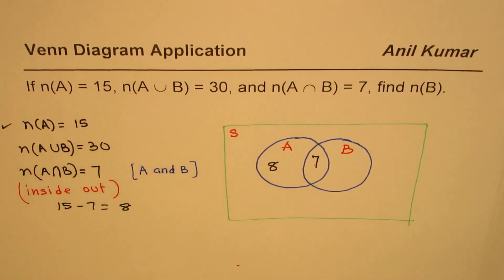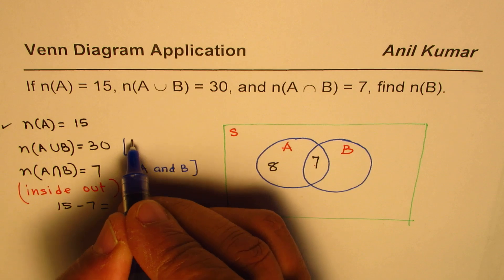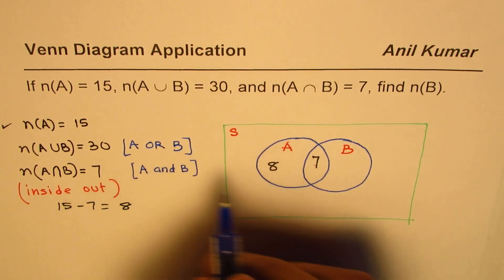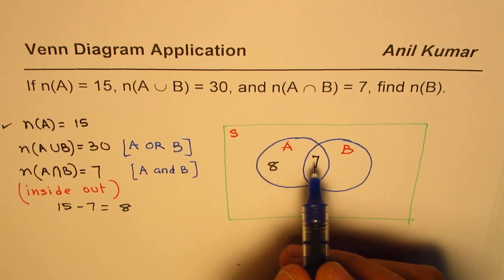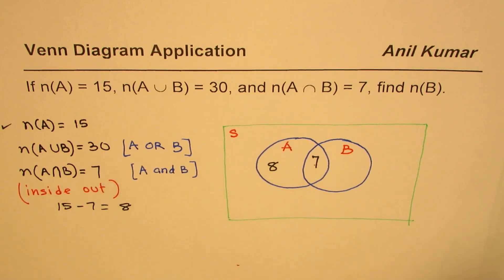Union means or. A or B. So, we have to add these numbers. So, we already have 8 plus 7, which is 15. The total is 30. Total is 30.